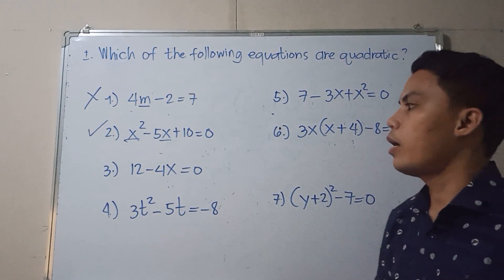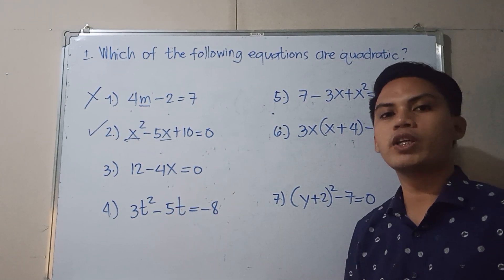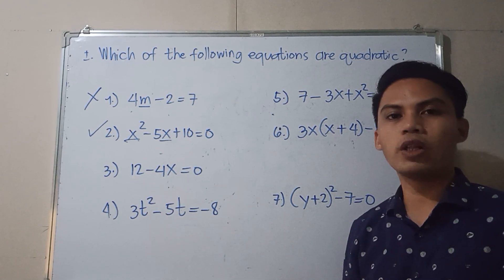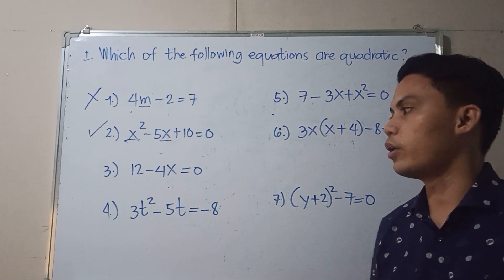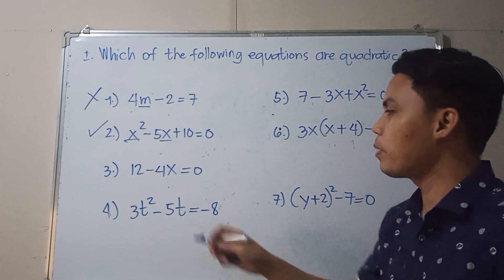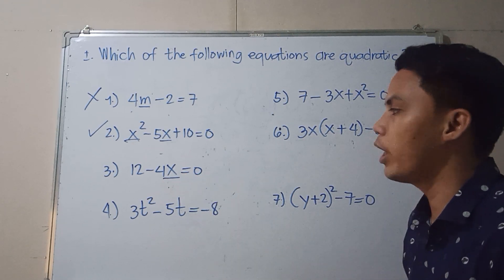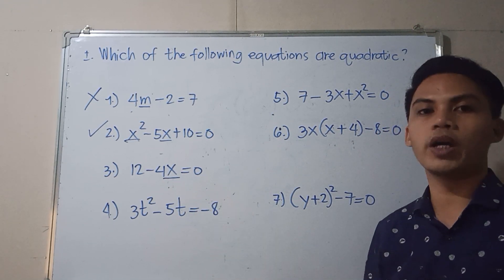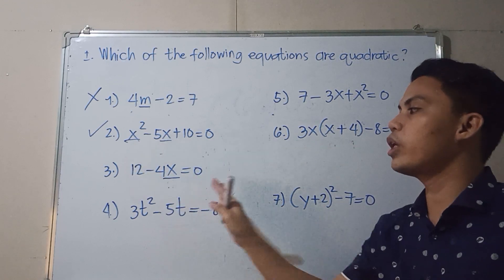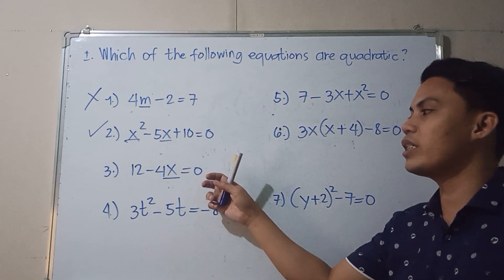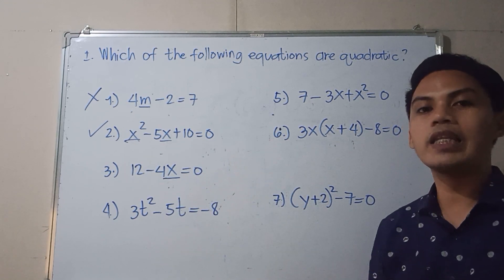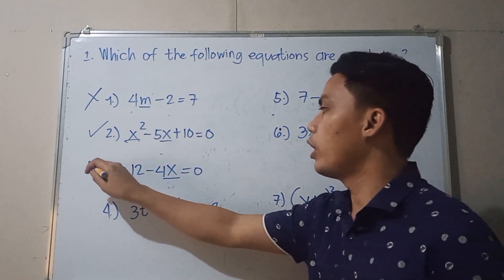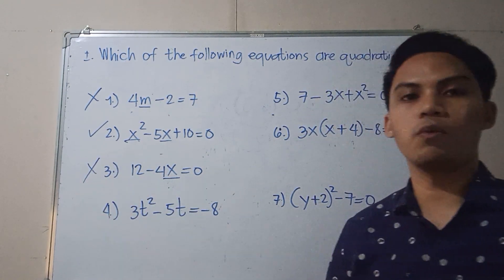How about number 3? We have 12 minus 4x is equal to 0. Looking at the variable x, its degree or exponent is 1. So the degree of this equation is 1. Therefore, this is a linear equation and not a quadratic equation.